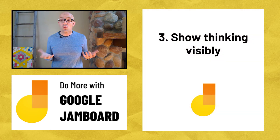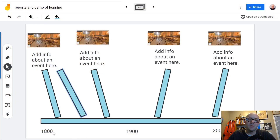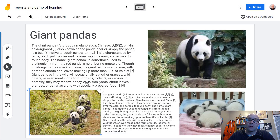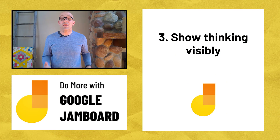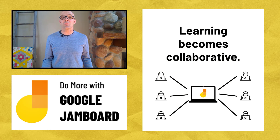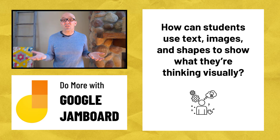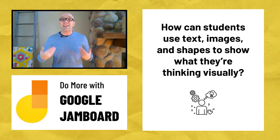The third way is to have students show their thinking visibly. Start them off with a blank Jamboard file. Students can brainstorm with sticky notes, add images and text that almost look like a digital poster, or add icons and text to build an infographic to show learning. When they share a file that anyone can edit, it becomes collaborative — everyone can work together in the same shared digital space, whether they're six feet apart or 600 miles apart. Ask yourself: how could students use text, images, and shapes to show you what they're thinking visually? When they do that, it's almost like we can peer inside the minds of our students, and it gives us much more to work with than simple answers on a paper worksheet.